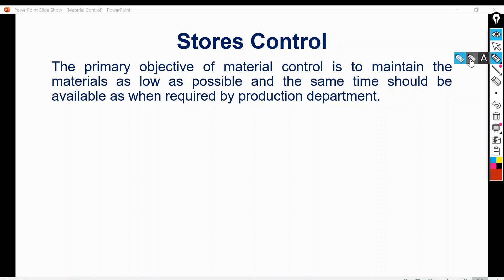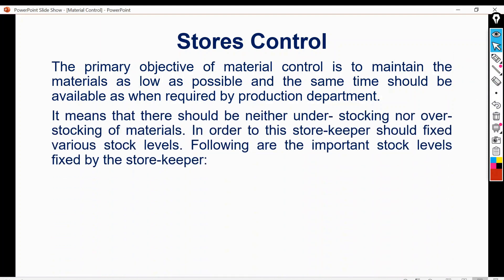In store control, there are two main things. First, material should be as low as possible, meaning least funds blocked in material inventory, because material is part of current assets, and current assets are assets which cannot create income strictly. This means there should be neither understock nor overstocking of material. In order to achieve this, the storekeeper should fix various stock levels.